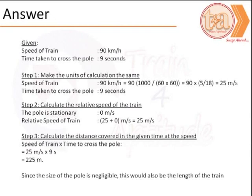Let us now get to calculating the answer. Given that the speed of the train is 90 km per hour, we would first need to convert it into meters per second. The calculation would give us 25 meters per second as shown.